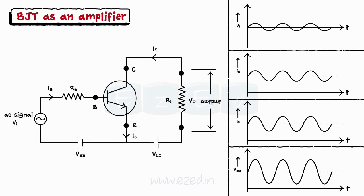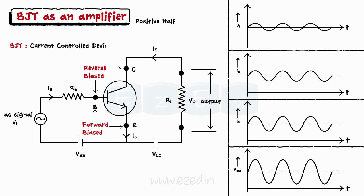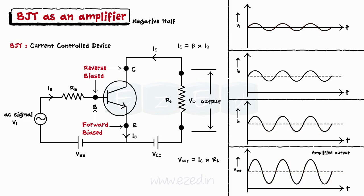Let's study the operation of a BJT as an amplifier when connected in the common emitter configuration. We apply an AC signal at the input. During the positive half, the base-to-emitter junction becomes forward biased while collector-to-base remains reverse biased. BJT conducts, base current IB increases, and since BJT is a current control device, the output current increases by the factor beta × IB. This increased IC generates more output voltage as Vout = IC × RC. During the negative half, base current decreases due to reverse bias, so IC also reduces, reducing output voltage. Thus we obtain an amplified output for both halves of the input signal.